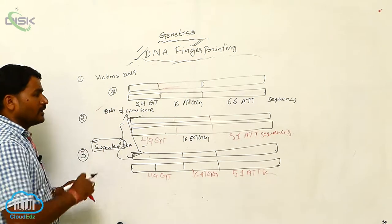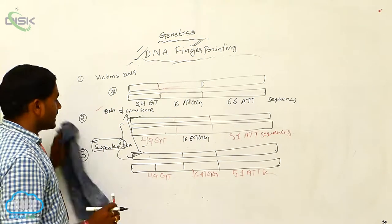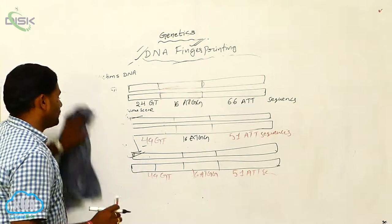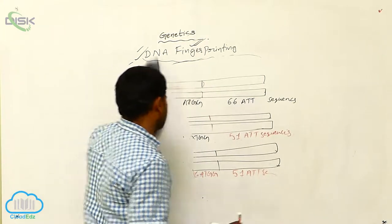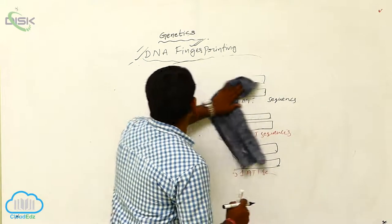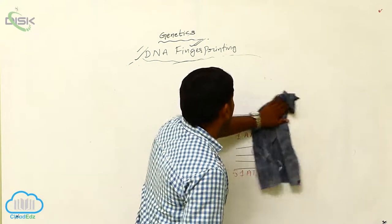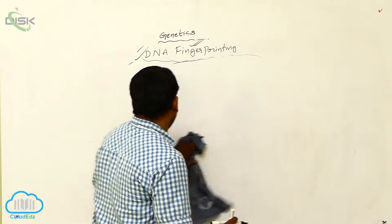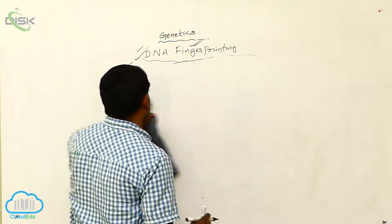In this way, we can identify a criminal with the help of DNA fingerprinting. This is one example of how we can use DNA fingerprinting technology for the identification of a criminal.